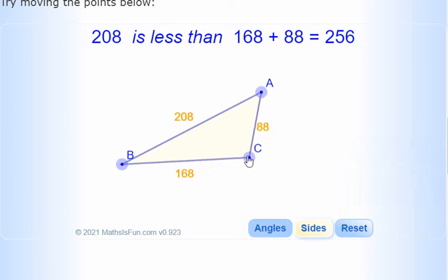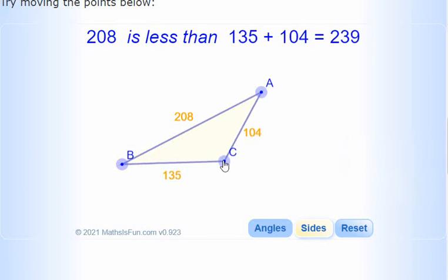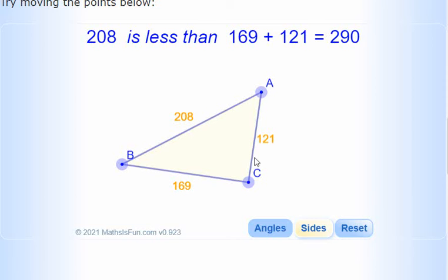So it's got nothing to do with the angles. Check this out. Notice that if you take the two short sides, the 169 and the 121, that adds up to 290. So it turns out the sum of any two sides of a triangle has to be more than the other side. Otherwise, it wouldn't be a legal triangle.